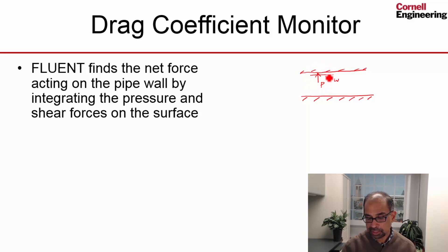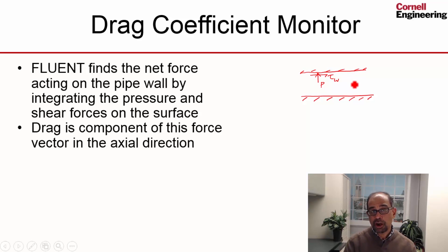And by integrating these two forces, you can get the net force on the wall. Drag is a component of this force in the axial direction because, by definition, it's the force in the direction of the flow. So we want the component in that direction. That's a direction of the drag. And perpendicular to that is the lift. And we can see here that only the wall shear is going to contribute to the drag because the pressure is perpendicular to the direction of the drag.